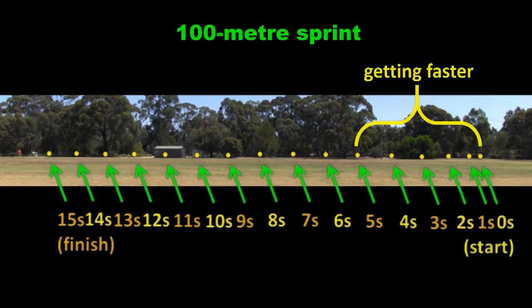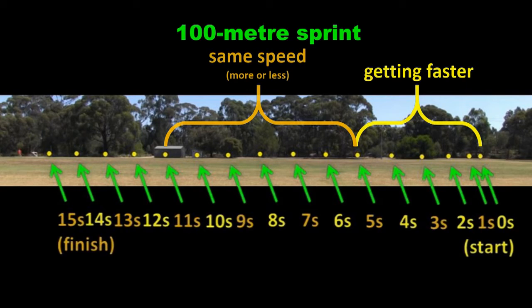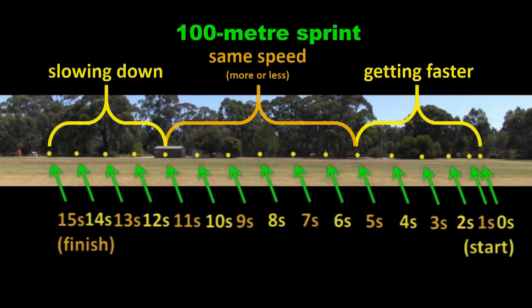As I got faster near the start, I covered more and more distance every second. In the middle of the sprint, I was travelling more or less at the same speed, since I was covering the same distance every second. Towards the end, I slowed down a little and was covering less distance per second.